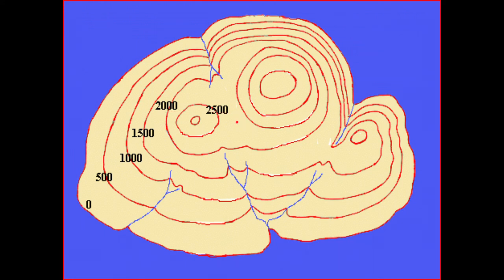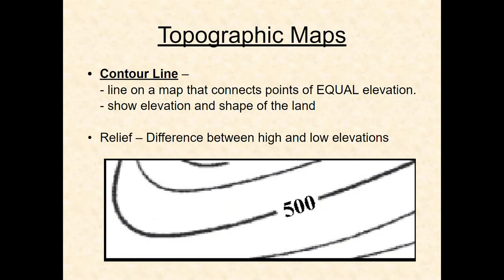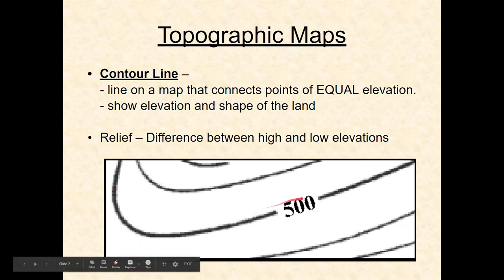So this is a topographic map, or contour map. What makes it work is the contour line — it always shows an equal amount of elevation. Anywhere you follow the 500-foot line, it is always 500 feet. You can also figure out the relief, which is the difference between different contour lines.